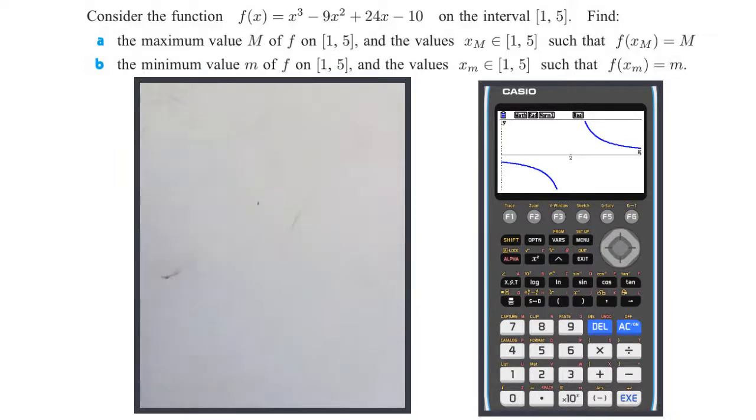Consider the function f(x) = x³ - 9x² + 24x - 10 on the closed interval [1, 5], so it includes 1 and 5. We need to find the maximum value M of f on the interval [1, 5],